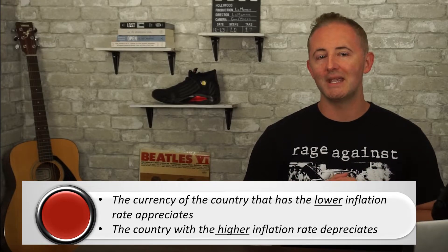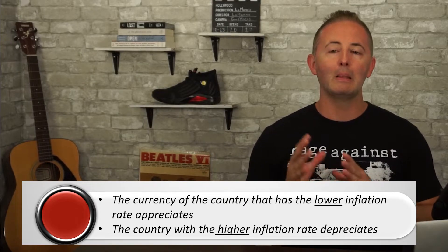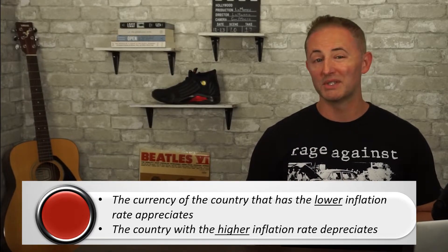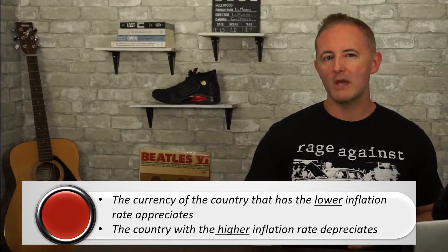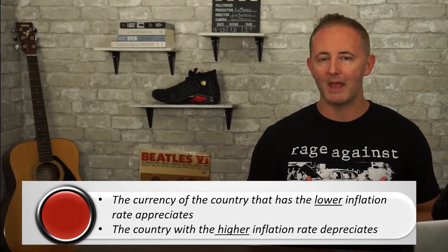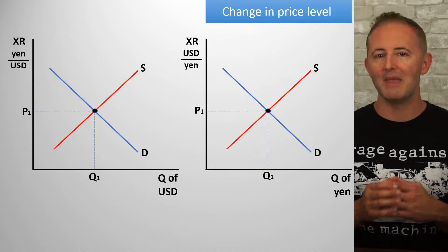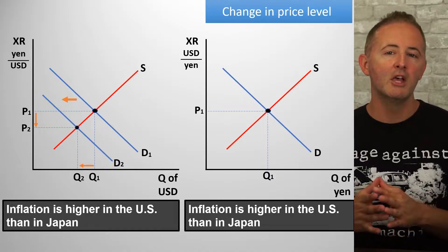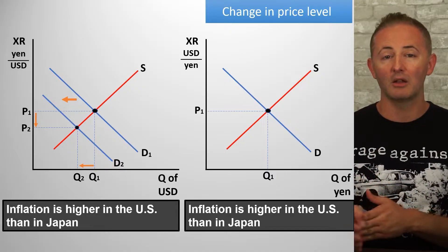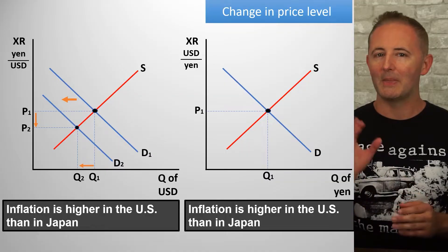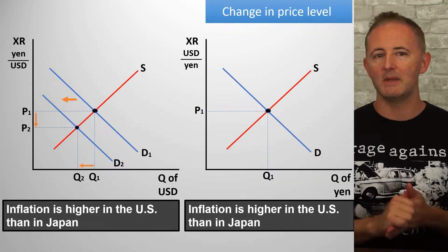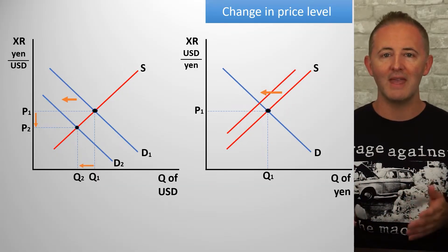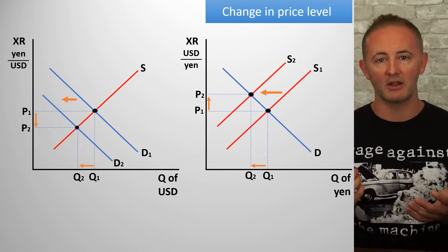Next is relative changes in the price level. The currency of the country with a lower inflation rate will appreciate, while the country with a higher inflation rate will see their currency depreciate. Let's say that the U.S. has a higher inflation rate than Japan. People in Japan won't want to buy as much stuff made in the U.S. because American-made stuff is becoming relatively more expensive. So this shifts the demand for the dollar to the left, depreciating the dollar. At the same time, since they aren't buying as many dollars, Japanese people wouldn't need to supply as many yen, causing the supply curve of yen to shift to the left, causing an appreciation for the yen.